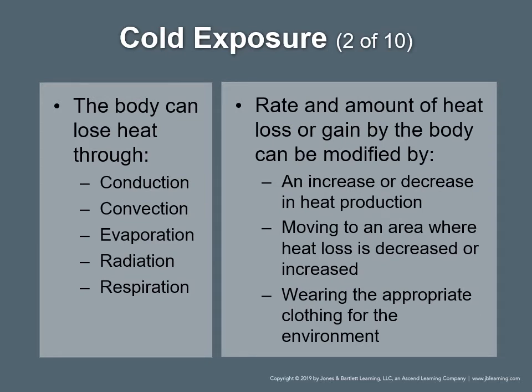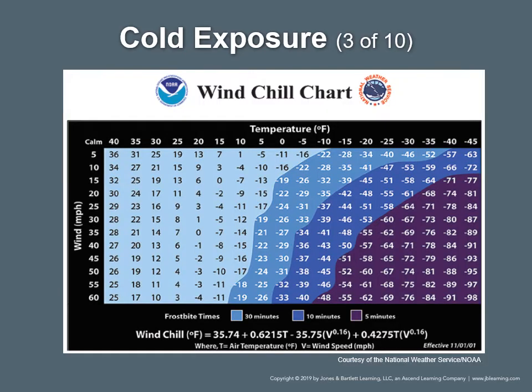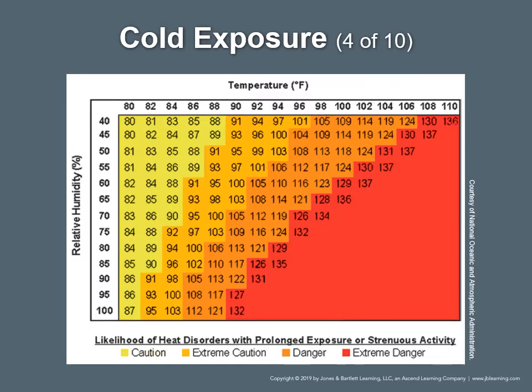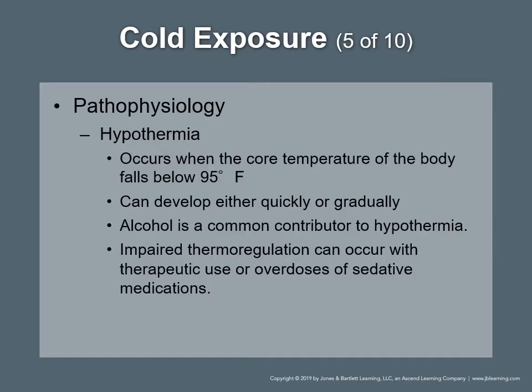Through thermolysis, or methods of heat loss, the body can lose heat in five ways: conduction, convection, evaporation, radiation, and respiration. The rate and amount of heat loss or gain can be modified in three ways: increase or decrease heat production, move to an area where heat loss is decreased or increased, and wear the appropriate clothing for the environment. There are also wind chill factor and heat index tables relevant to understanding exposure risk.